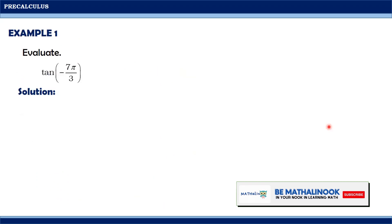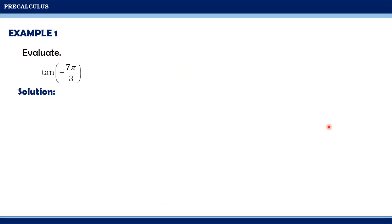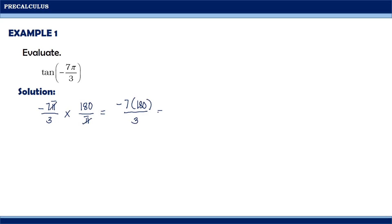Now let us solve some circular functions. For the first one, we have tangent of negative 7π/3. To find the value, we convert the angle to degree measure: negative 7π/3 times 180/π. We get negative 7 × 180 / 3, which equals negative 420 degrees.